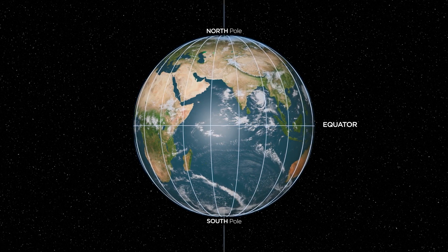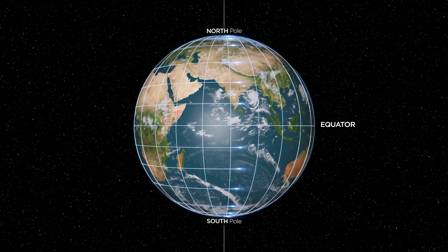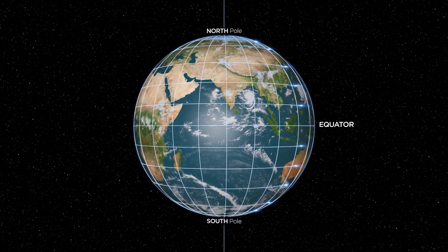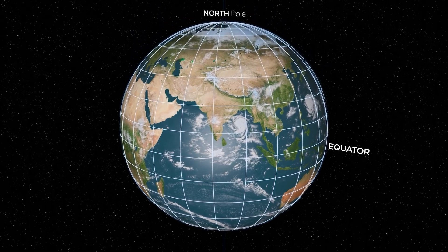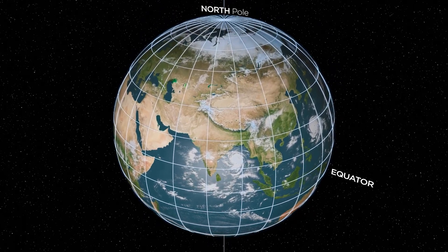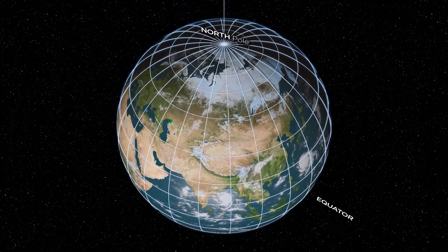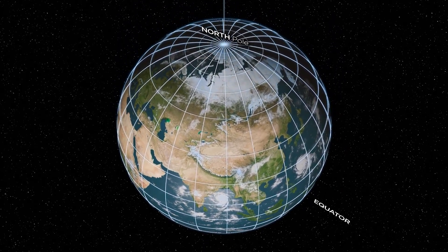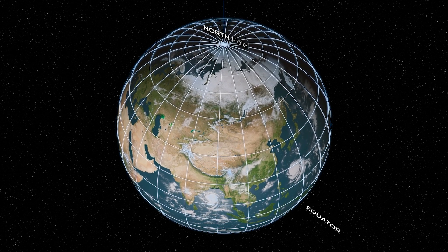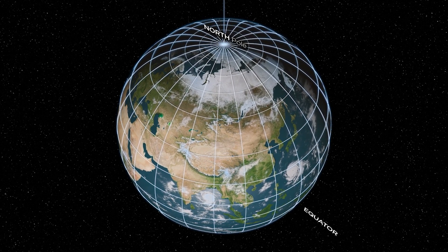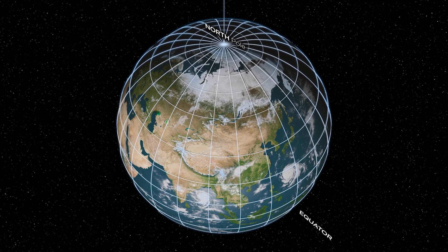If we look at the Earth from the top, you can see quite clearly that the meridians are not parallel. The further north you get, the more the lines leave parallel, because they're converging towards a point.